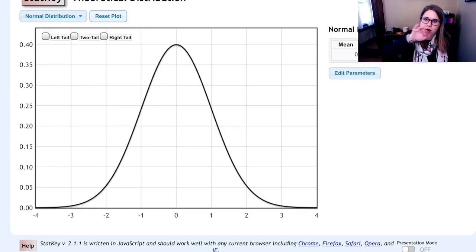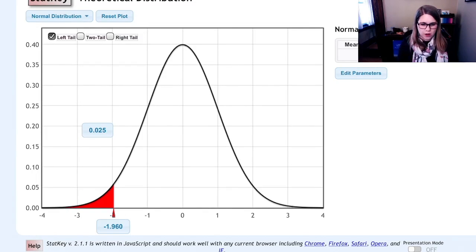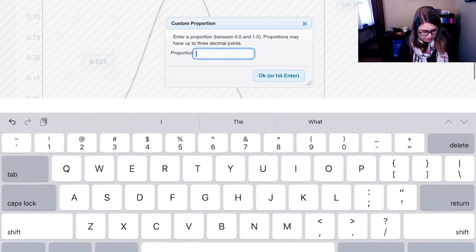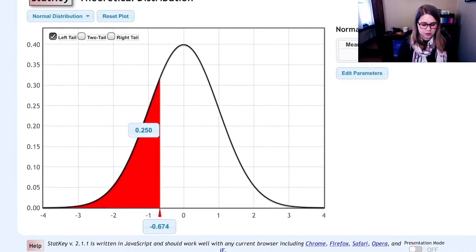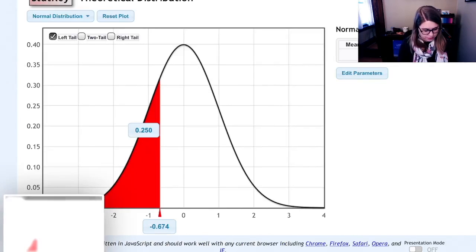I want a left tail so I can find the 25%. I don't want 2.5%, which is what's on here. I want 25%, 0.25. So that would be 0.674 standard deviations below the mean. So I'll stick a screenshot of that into my notes.